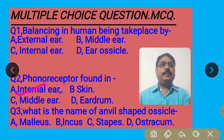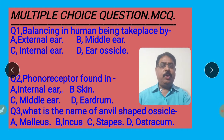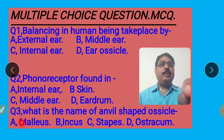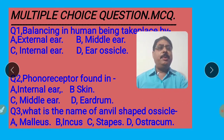Next question, question number 3: What is the name of the animal-shaped ossicle? There are four options: option A, malleus; B, incus; C, stapes; D, ostrichum. The right answer is B, incus. I have given a formula in the video — please see my video for detail of the question. I shall give a link at the end screen.